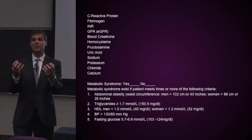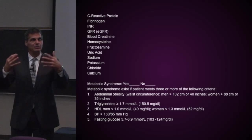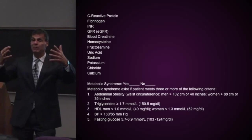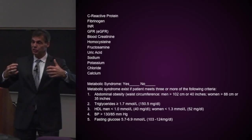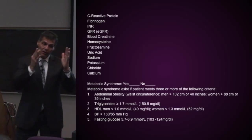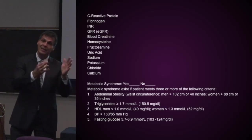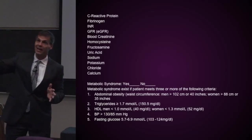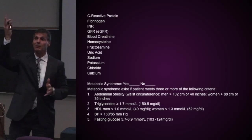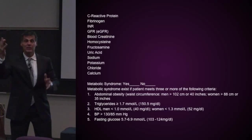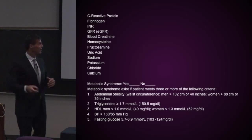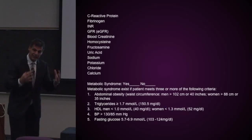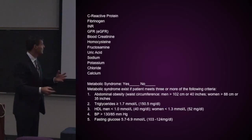As homocysteine builds up in the bloodstream, there's an increased risk of vascular disease. Homocysteine builds up when B vitamin levels are too low, because you need folic acid, vitamin B12, and vitamin B6 to recycle homocysteine back to methionine. So if homocysteine is high, I know they need more B vitamins. Homocysteine damages the blood vessel wall and increases the risk of vascular disease.